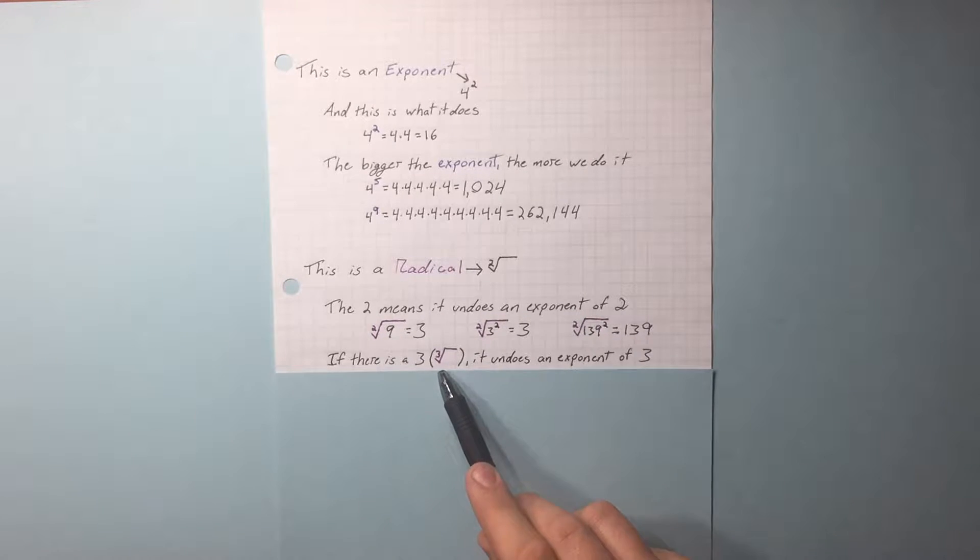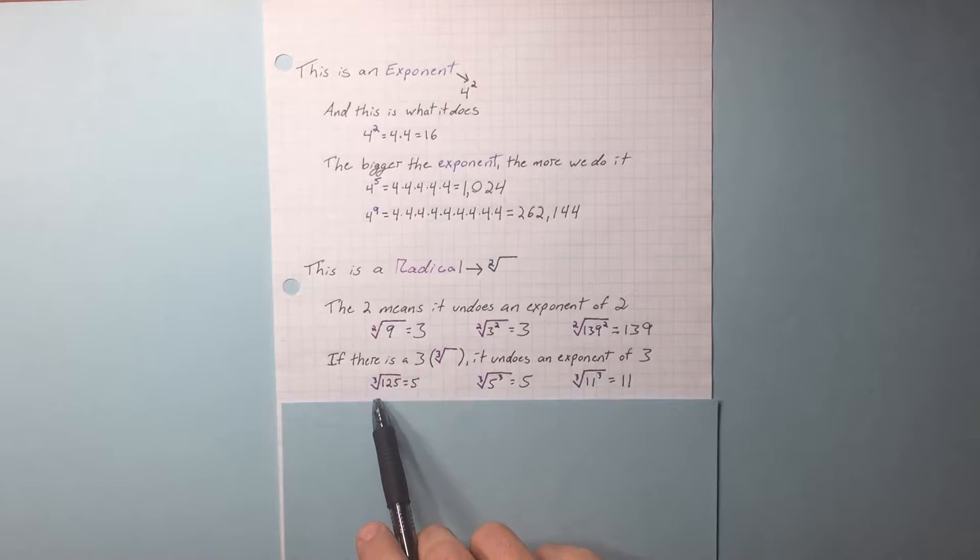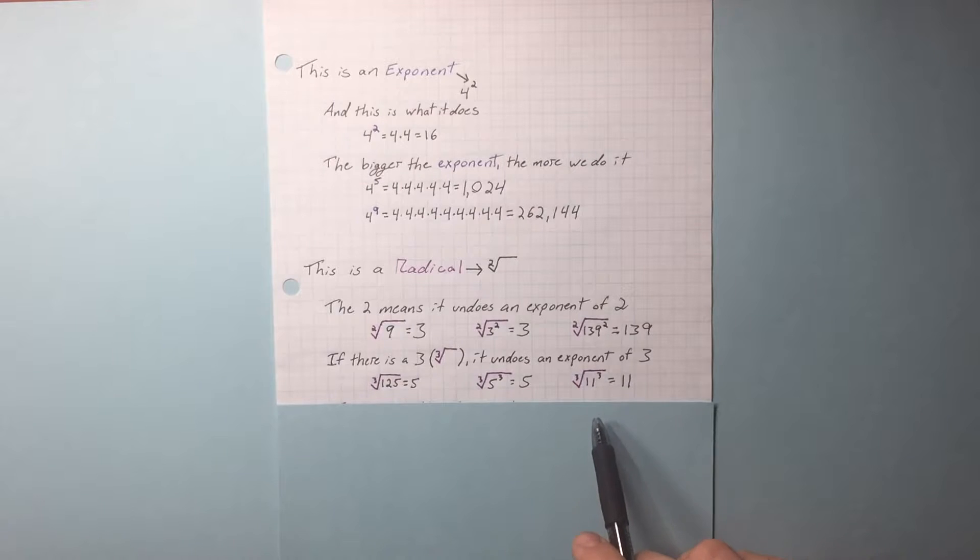If there is a 3 in the crook, it undoes an exponent of 3. So the cubed root of 125 is 5. The cubed root of 11 cubed is 11.